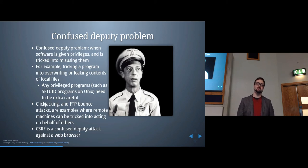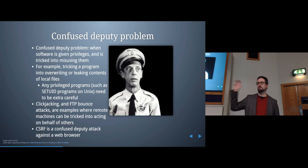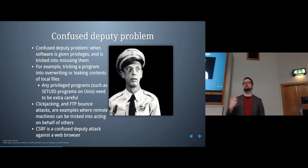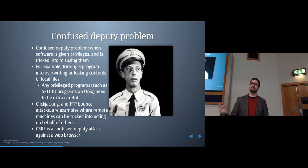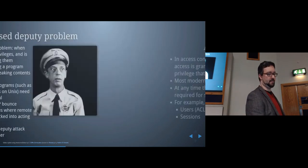Other examples of confused deputy problems include clickjacking, where a website tricks the browser and has JavaScript running that clicks on ads the user hasn't even seen, driving up ad revenue. There are also FTP bounce attacks where you get an FTP server to send requests for you. CSRF is a related problem — the web browser is the confused deputy, happily sending requests it receives without knowing the user didn't intend them.